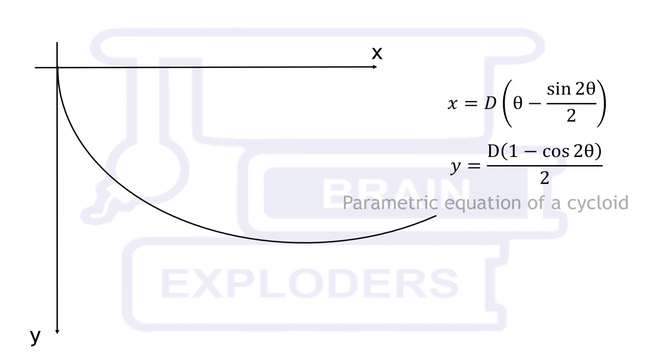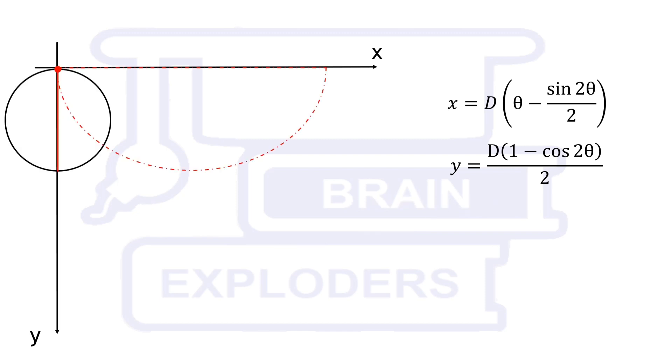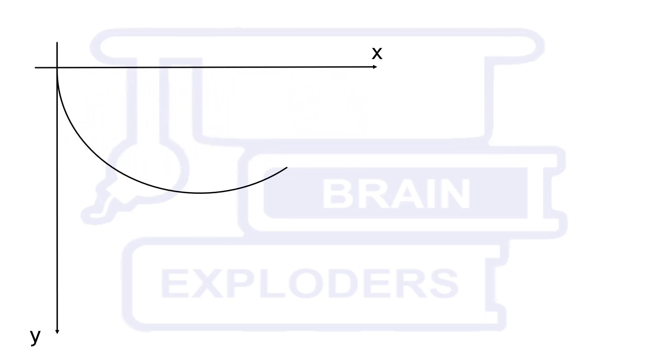This is a parametric equation of a cycloid. r times phi minus sin phi and r times 1 minus cos phi is usual notation but we will keep using this with d and theta in this video. Cycloid is the locus of a point on a circle which is moving on any line performing rotational motion without slipping. In these parametric coordinates d represents the diameter of the circle and theta is the angle between tangent to this curve and negative y axis.